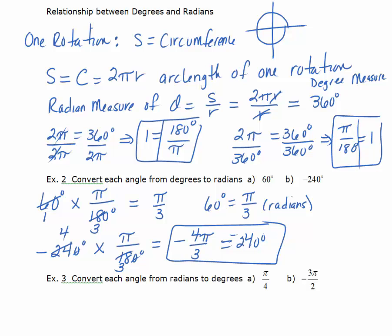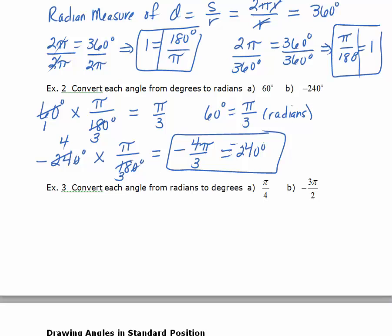Now we convert from radians to degrees using the other conversion factor. Starting with π over 4, multiply by 180 degrees over π. The π's cancel, then reduce 180 by 4: 4 goes into itself once, and 4 goes into 180 forty-five times. So π over 4 radians equals 45 degrees.